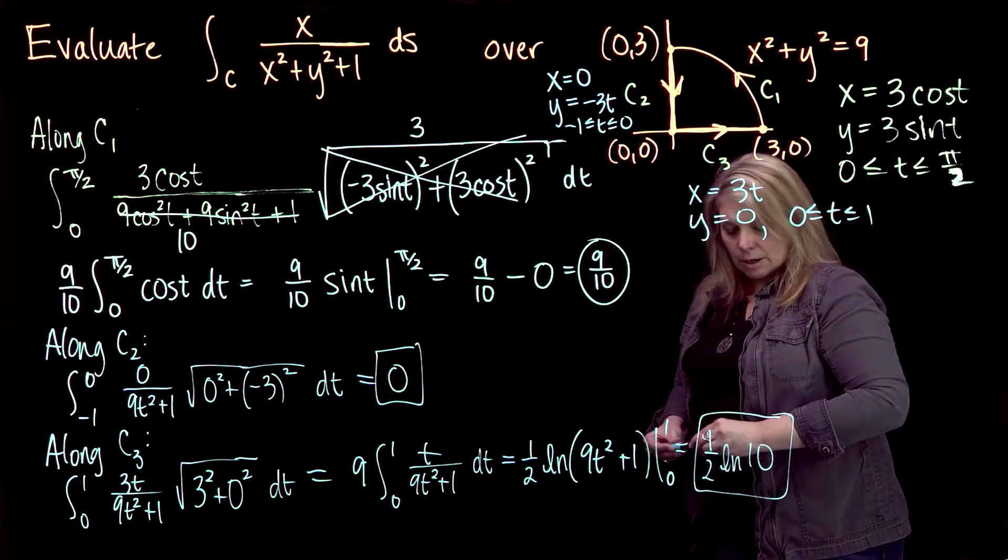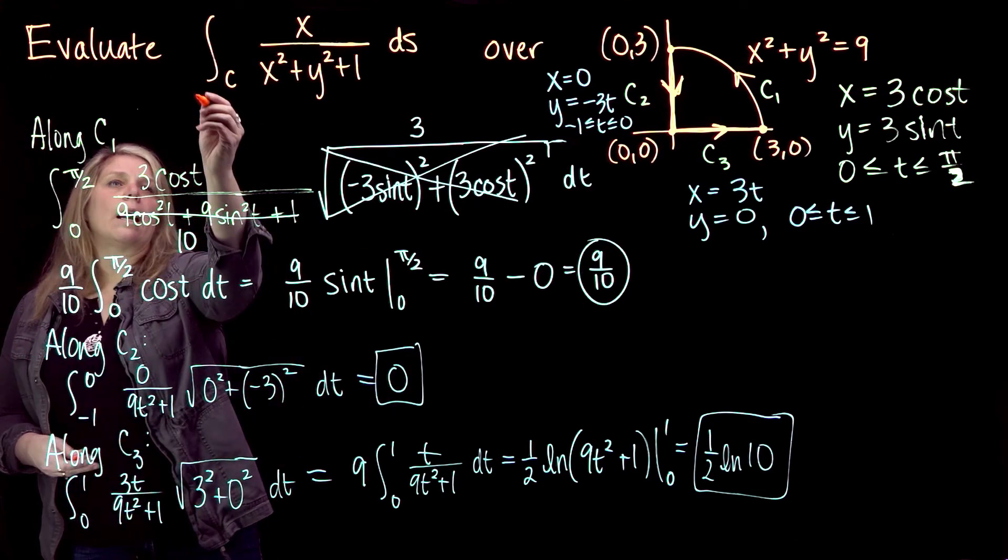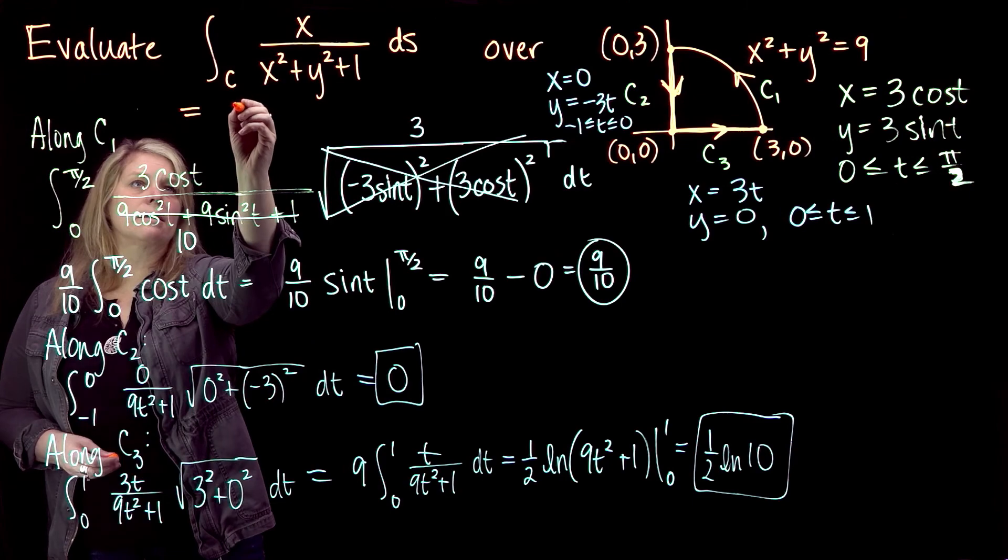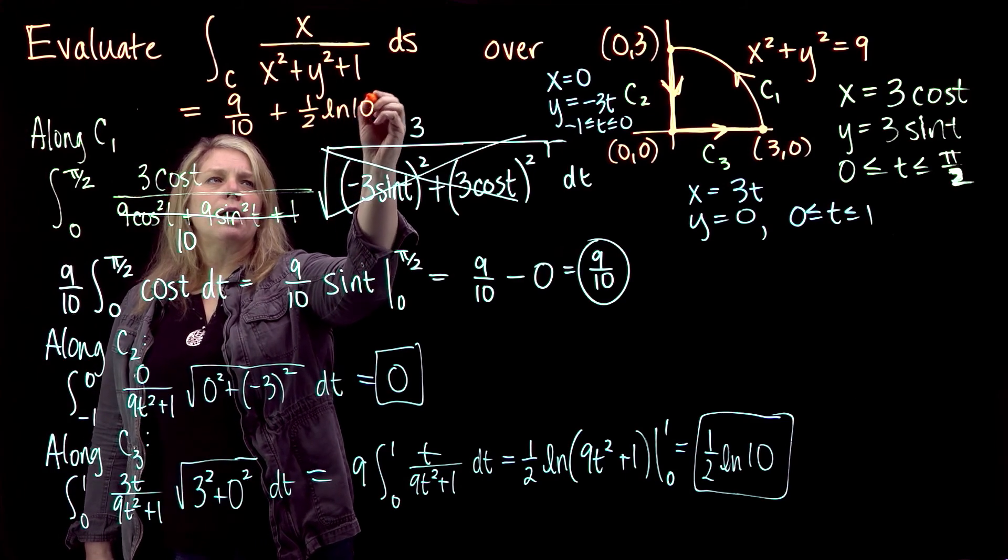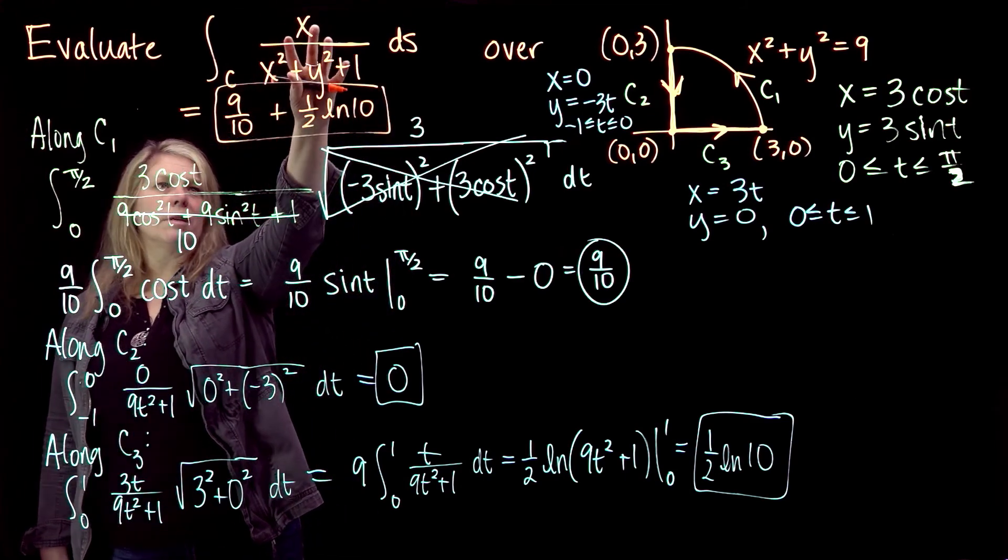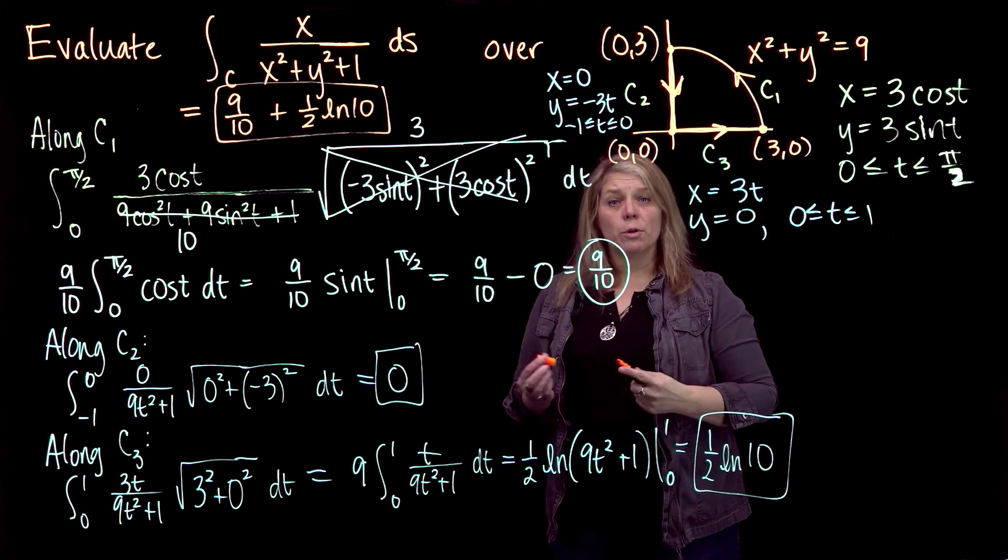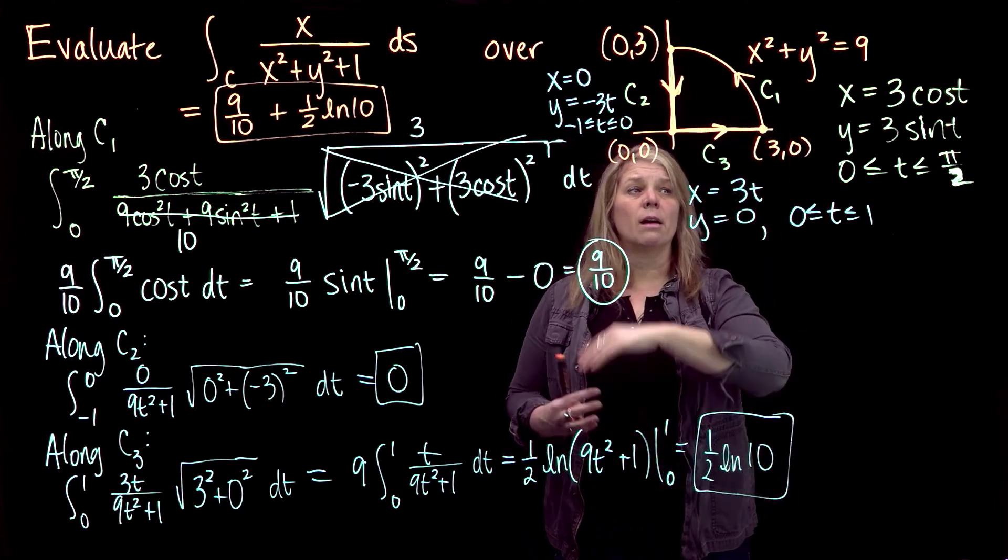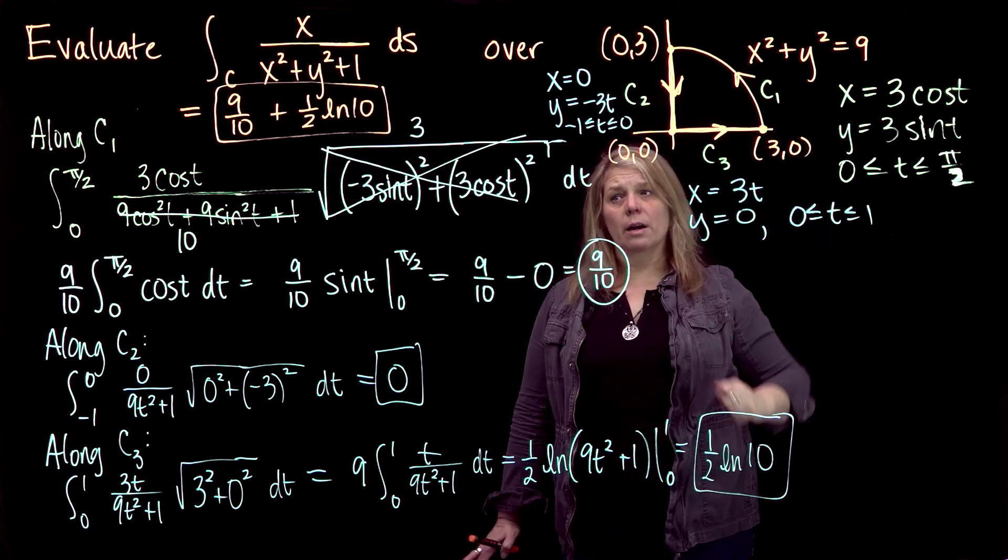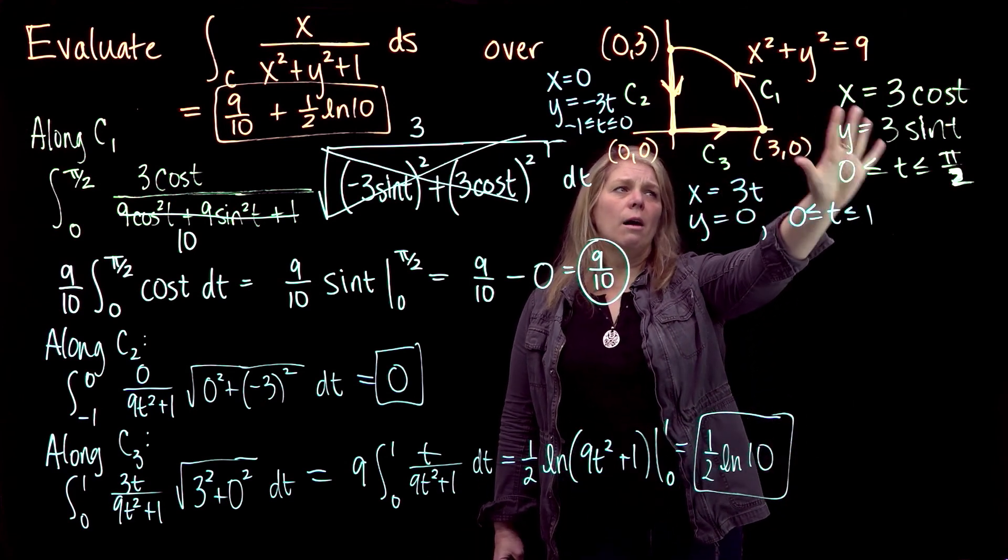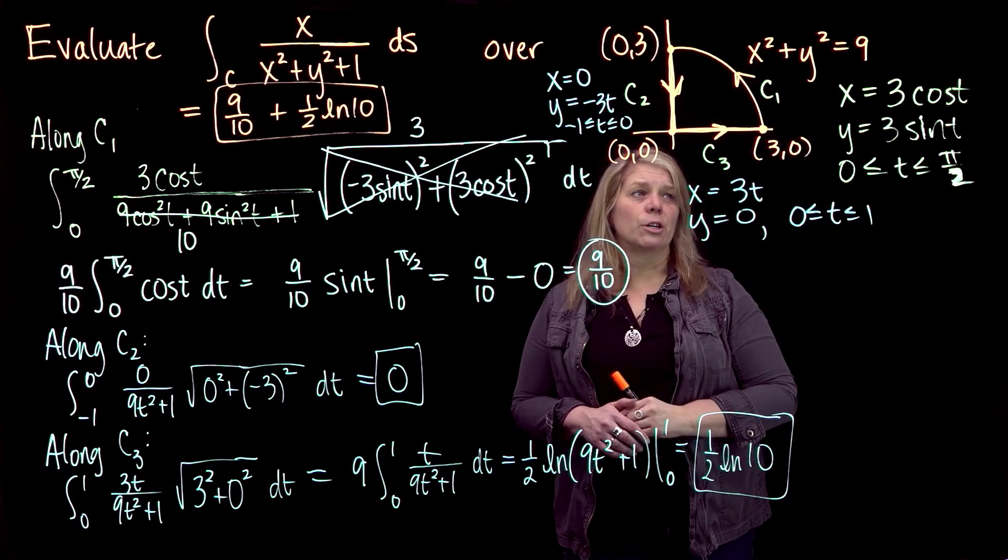To evaluate the line integral we were interested in at the beginning, we're going to add up these three answers. Our answer for the line integral is 9/10 plus 0, I don't need to write that, plus 1/2 times natural log of 10. That will be my answer for the total value of this function along this entire curve. The point of this was thinking about if you have something that's not smooth but is piecewise smooth, doing that in three separate pieces. And also recalling how to parametrize a circle. That's something that's going to come up a lot in the problems you work on in this chapter.